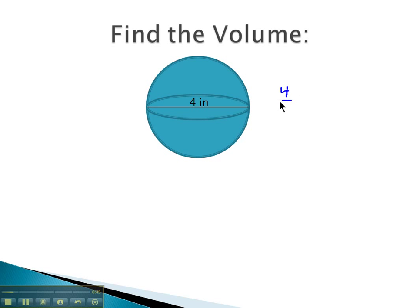The formula for volume was 4 thirds pi times the radius cubed, which means we need to know the radius, the distance from the center to the outside of the circle.